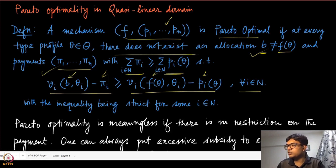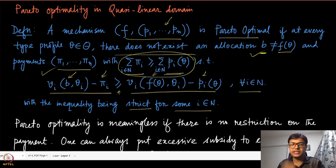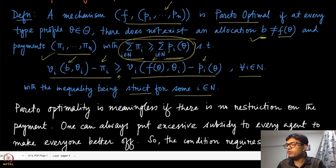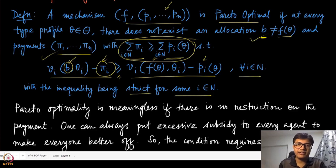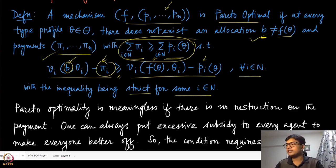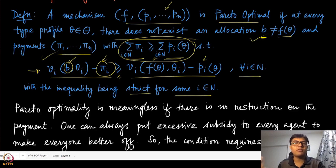This inequality is weak for all players and strict for at least one agent. Why do we need this additional payment constraint? If we did not have this constraint, one could easily find some allocation and give sufficient subsidies — making all the πᵢ's negative, meaning the mechanism designer pays a lot of money to the agents, making the inequality very easy to satisfy. So we do not want that. In addition to requiring the utility inequality to hold, we also want the counterexample allocation and payment to extract at least the same total payment as the original mechanism.